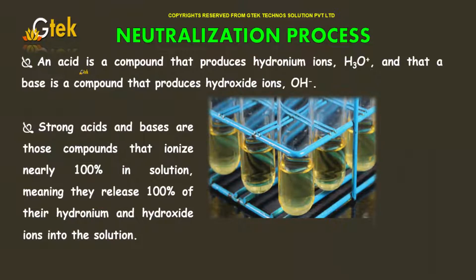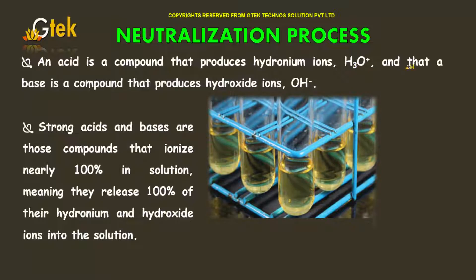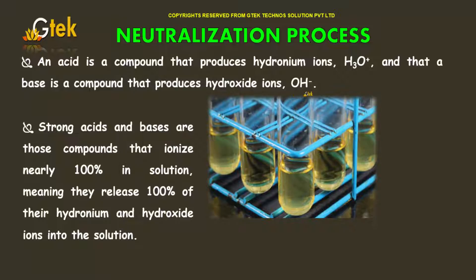An acid is a compound that produces hydronium ions, H3O+. A base is a compound that produces hydroxide ions, OH-.